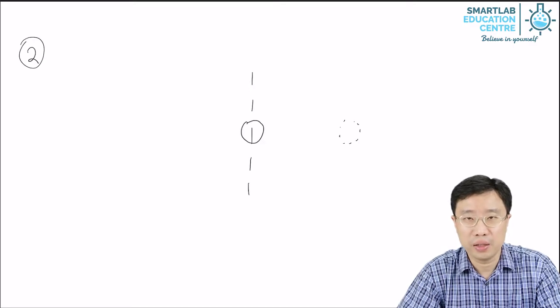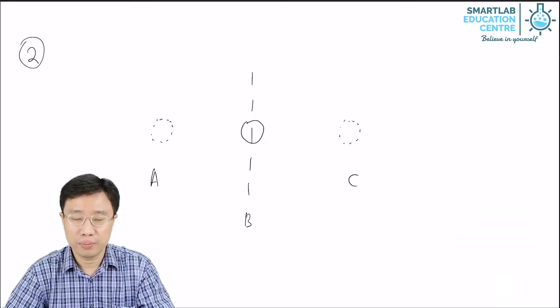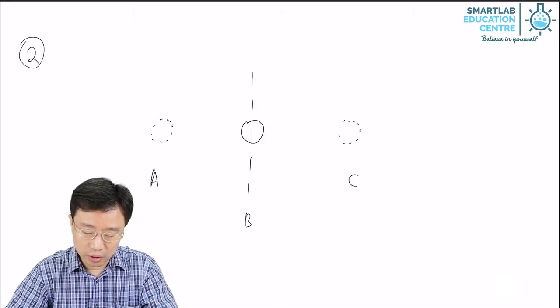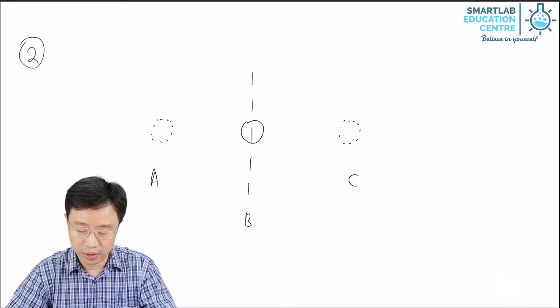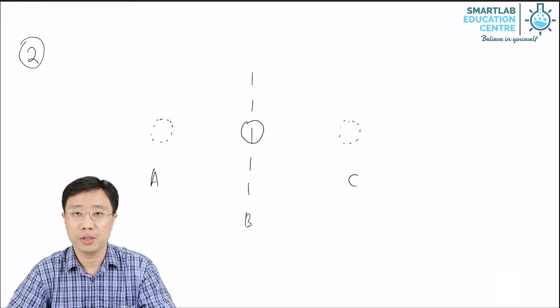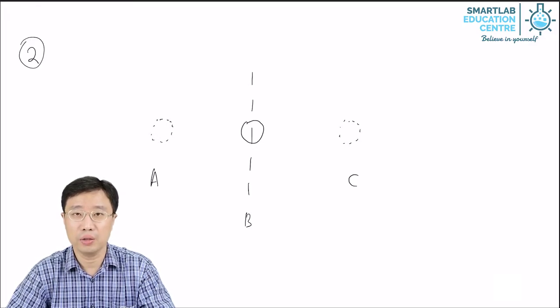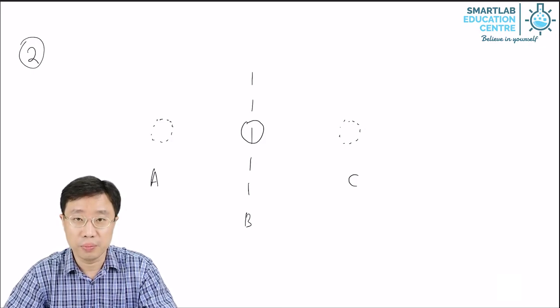Let's consider a particle in a solid. In this diagram the dotted line is the position of the particle when it is not vibrating. We call this position B.